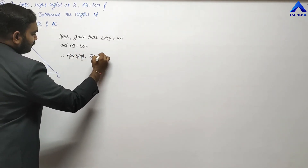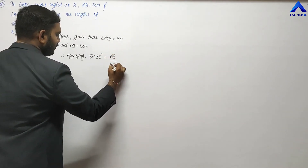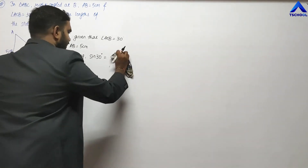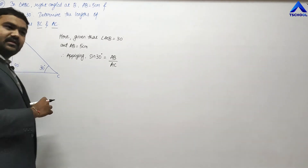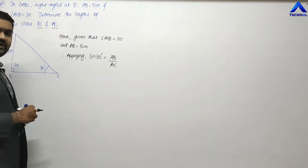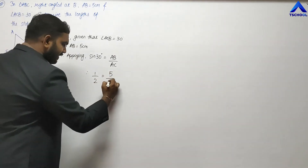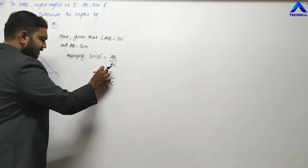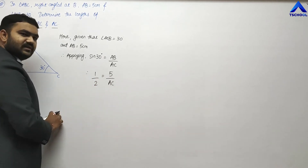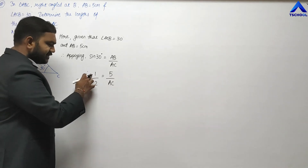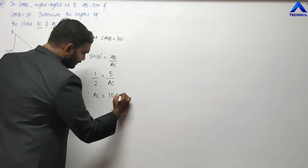Given that angle ACB equals 30 degrees and AB equals 5 cm. Applying sin 30: sin 30 = side opposite to 30 (AB) upon hypotenuse (AC), which is AB upon AC. The value of sin 30 is 1 by 2. So 1/2 = 5/AC. Cross multiplying: AC × 1 = 2 × 5, therefore AC equals 10 cm.